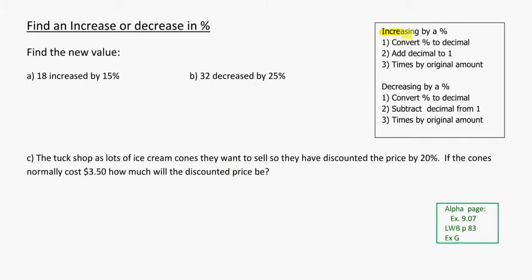If we look first at increasing, first thing I'm going to ask you to do is convert the percentage to a decimal. We can do that in our heads. So 15%, move the decimal two spots over, that's going to become 0.15.